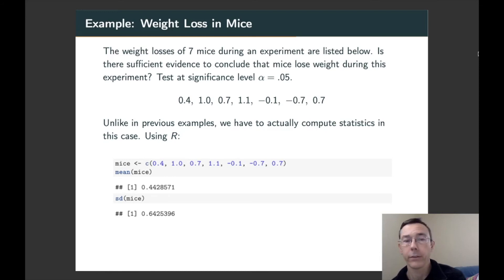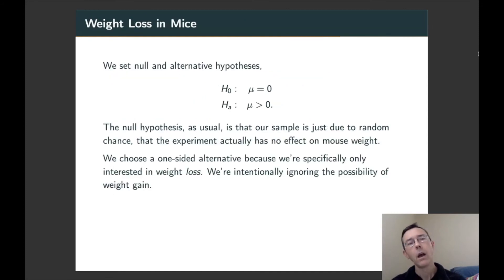Now let's start the test by setting a null and an alternative hypothesis. As usual, our null hypothesis is going to be the idea that our data is just due to random chance, that mice on average do not lose weight during this experiment and that our group just did through luck. The alternative hypothesis is the thing that we're interested in establishing. So here that mice do on average lose weight during this experiment. We've chosen a one-sided alternative because we are specifically interested in whether the mice have lost weight. We are not considering the possibility that they've gained weight. That's just not interesting to us here.